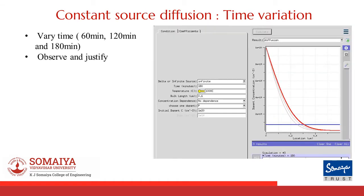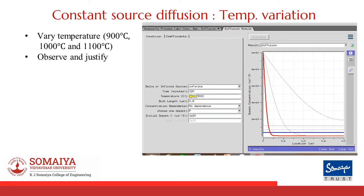Let's start with observing the effect on diffusion due to change in time. Vary the time from 60 minutes to 120 minutes and then 180 minutes. You will observe that the concentration remains N at x equals 0. Next, let's vary temperature from 900 degrees Celsius to 1000 degrees Celsius and then 1100 degrees Celsius and observe the effect on diffusion.